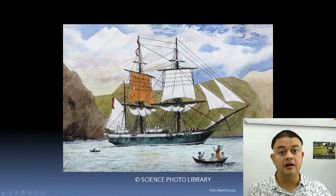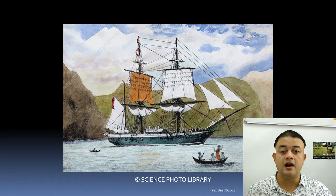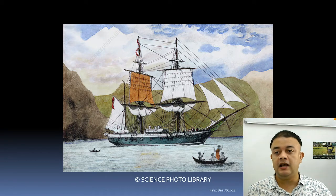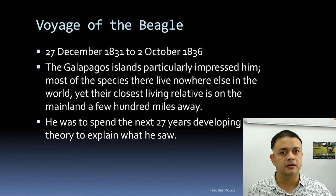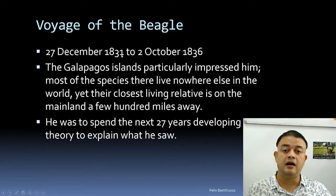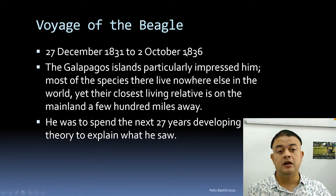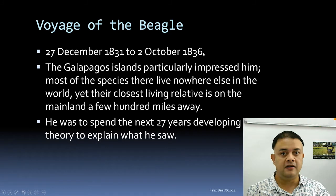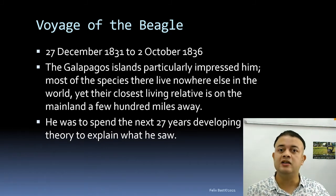The ship was the HMS Beagle, a British vessel. He departed from Plymouth in the west of England, embarking on 27th December 1831. The voyage lasted until 2nd October 1836 — more than five years.